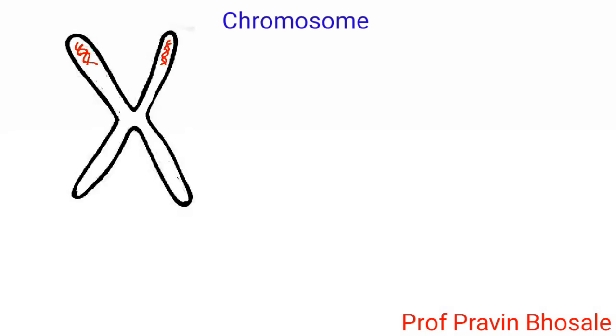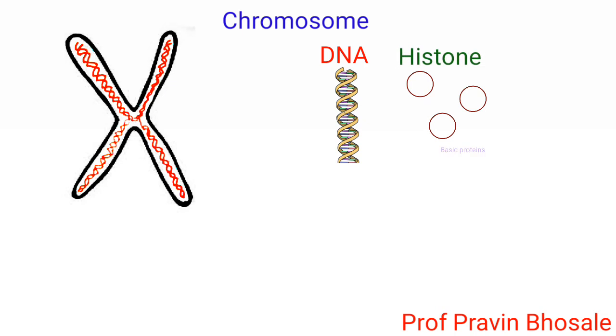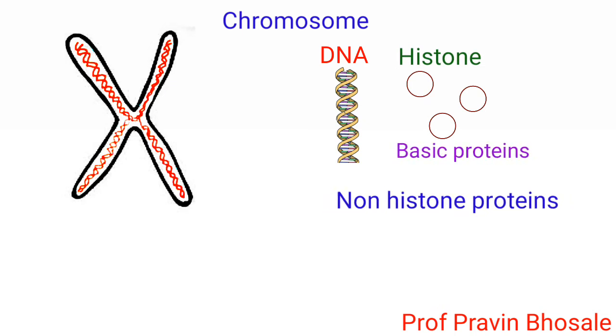Chemically, eukaryotic chromosomes are made up of DNA, histone (i.e. basic proteins), and non-histone proteins.